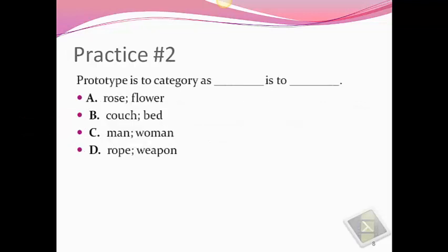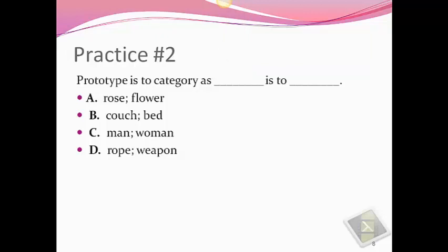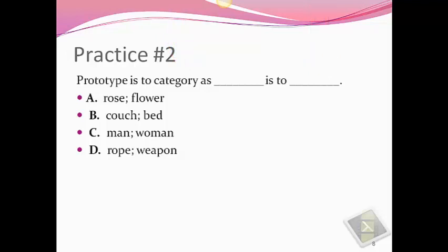Practice question number 2 — this is a tough one. It's an analogy type question that you often see — probably six or seven of these on an AP test. Prototype is to category as blank is to blank. Is the correct response: A. Rose is to flower. B. Couch is to bed. C. Man is to woman. Or D. Rope is to weapon. In this type of question, you want to divide it into two parts. First, prototype is to what? — would prototype be a rose, a couch, a man, or a rope? Basically, which one of those is specific? Second, category is to what? — flower, bed, woman, or weapon?